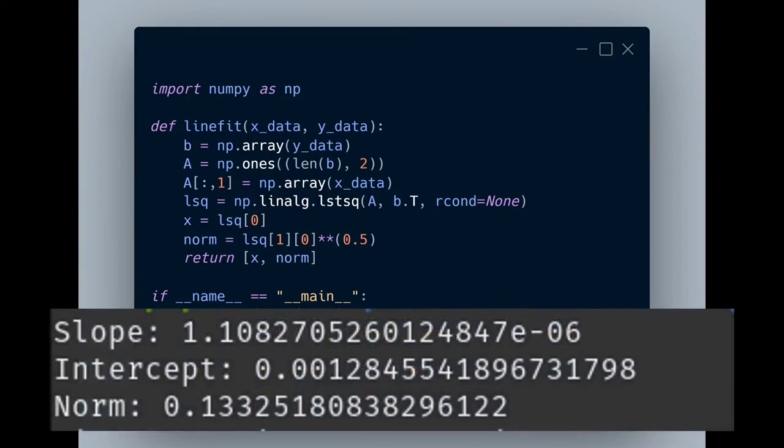these are actually the parameters that we get for that particular data set. We get a slope of about 1.1 times 10 to the negative six. Our slope intercept, which is very interesting, is almost zero. Remember, this is the least square solution. And the machine is trying to figure out what the best value is for these parameters.